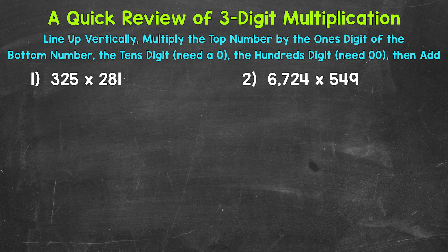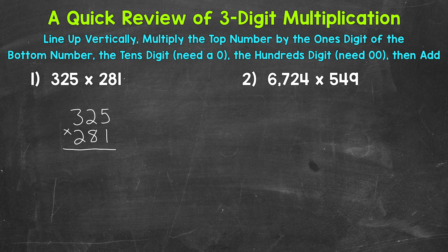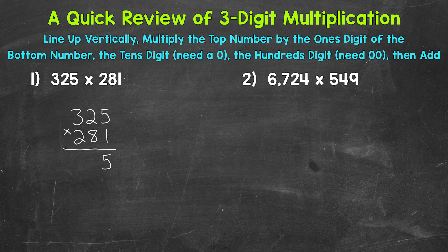Let's jump into number one, where we have 325 times 281. The first thing we're going to do is line this up vertically, so we're going to rewrite it up and down: 325 times 281. Now we're ready to go through our multiplication process. We start by multiplying the top number by the ones digit of the bottom number. The ones digit of the bottom number is the 1 in 281, so we need to take that 1 to the 5, the 2, and the 3. So 1 times 5 is 5, then 1 times 2 is 2, and then 1 times 3 is 3.